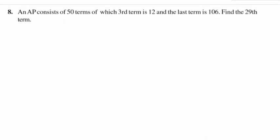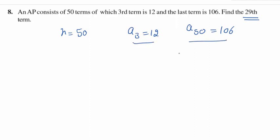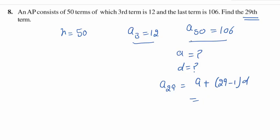Next question: An AP consists of 50 terms, of which the third term is 12 and the last term is 106. We are given n equals 50, a3 equals 12, and a50 equals 106, and we are asked to find the 29th term. By solving the two equations you will find a and d, then substitute into the formula a29 equals a plus 28d to get the 29th term.